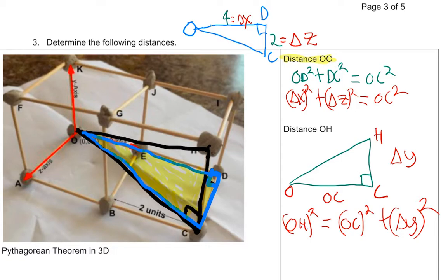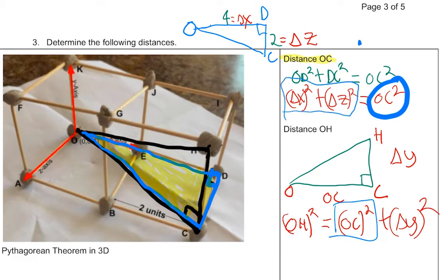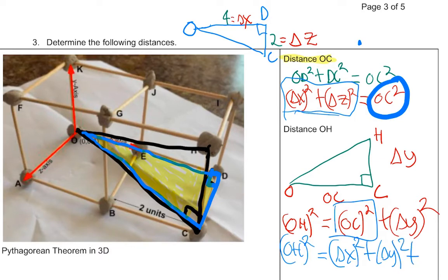So I've written: O to H squared equals O to C squared plus H to C squared, which is delta Y squared. But O to C squared is nothing more than delta X squared plus delta Z squared. So O to H squared equals delta X squared plus delta Z squared, plus delta Y squared. Rearranging, that's delta X squared plus delta Y squared plus delta Z squared.